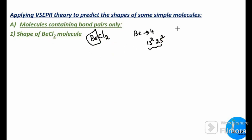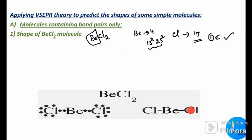The atomic number of chlorine is 17. Chlorine requires one electron to fulfill its octet. So each chlorine atom shares one electron with beryllium, and beryllium's two valence electrons are shared with the two chlorine atoms. Thus, two single covalent bonds are formed between beryllium and the two chlorine atoms.